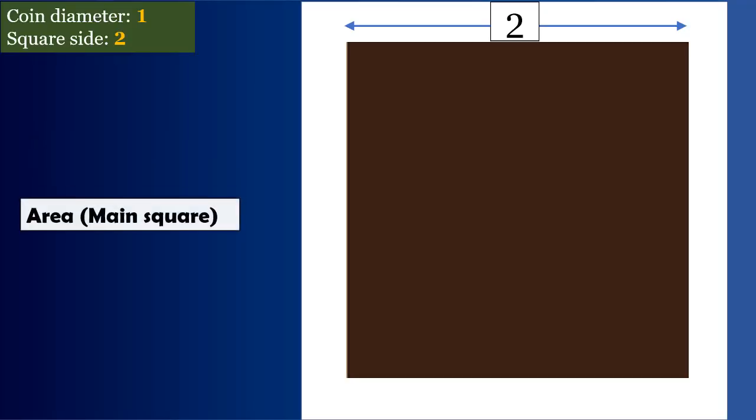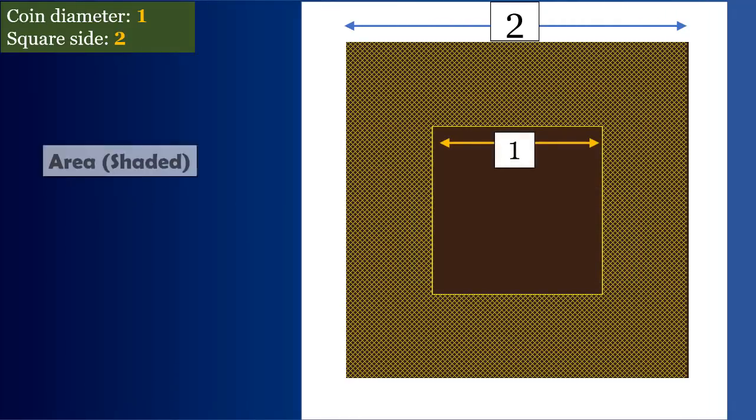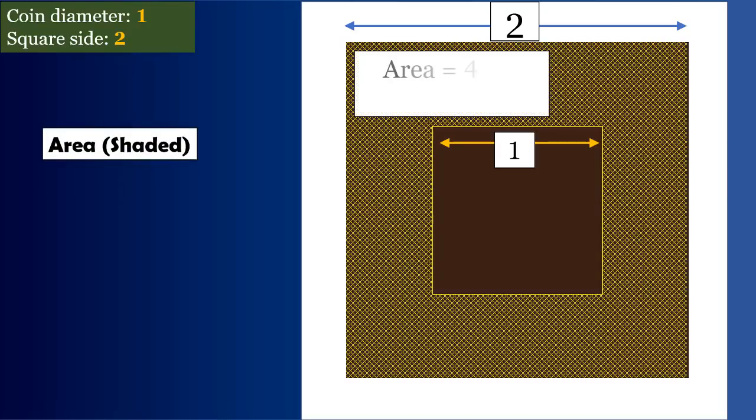The area of the main square is four. So the shaded area is four minus one, that's equal to three.